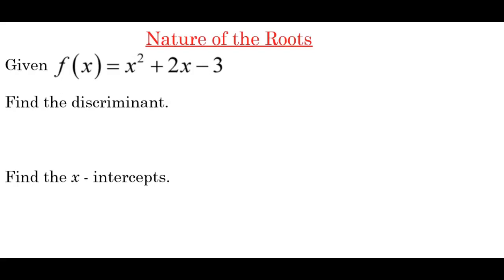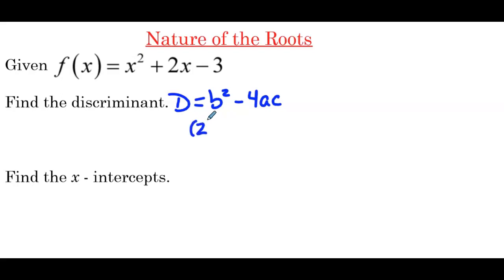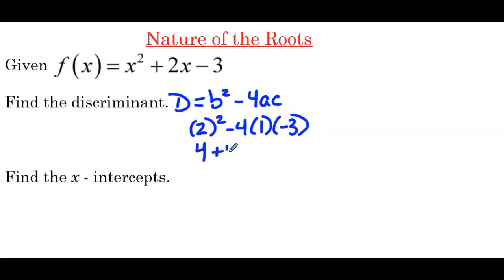So our first example: given f(x) = x² + 2x − 3, find the discriminant. The discriminant is b² − 4ac, so we're going to have positive 2 squared minus 4 times 1 times negative 3, so we have 4 plus 12, which is 16.